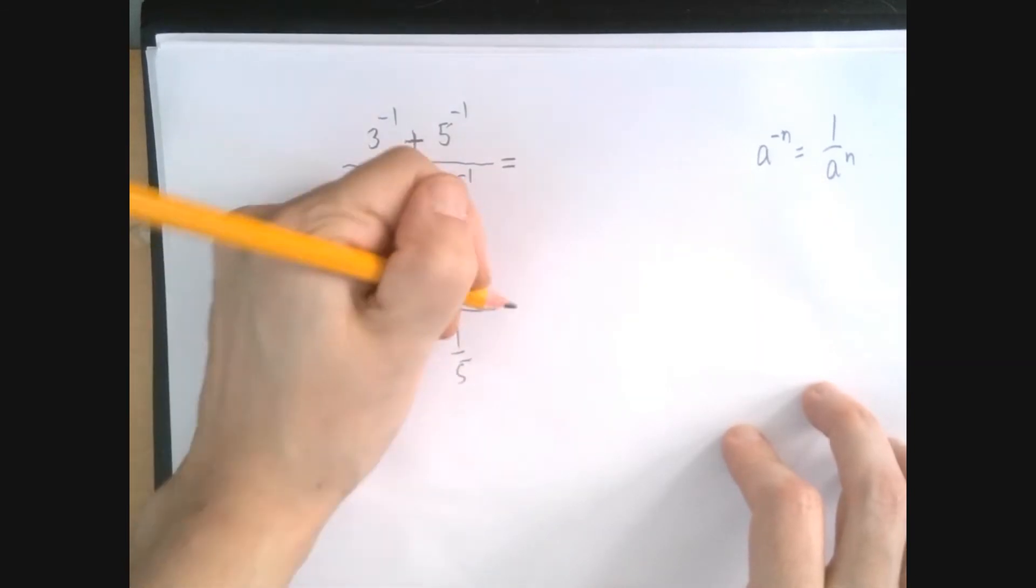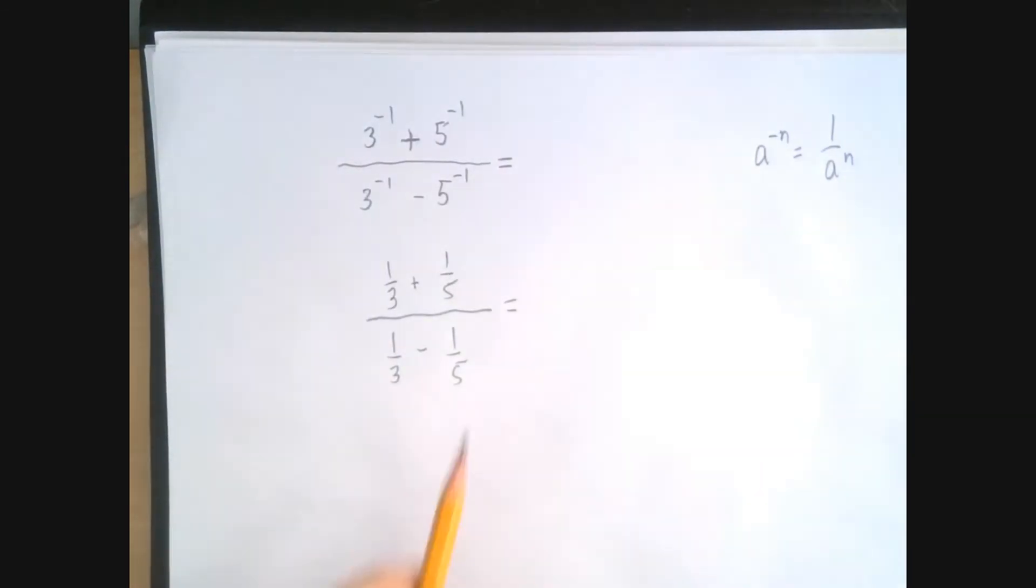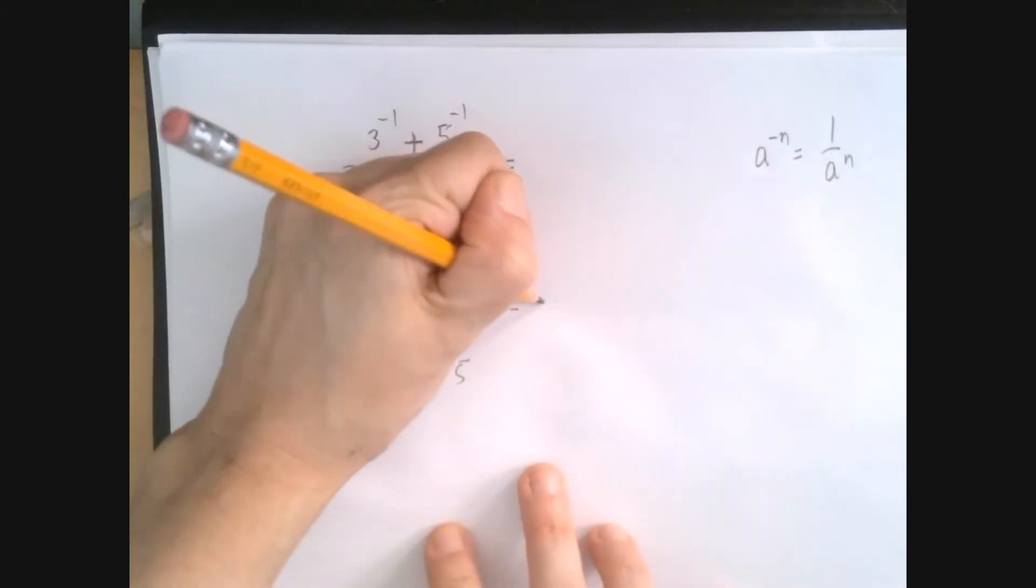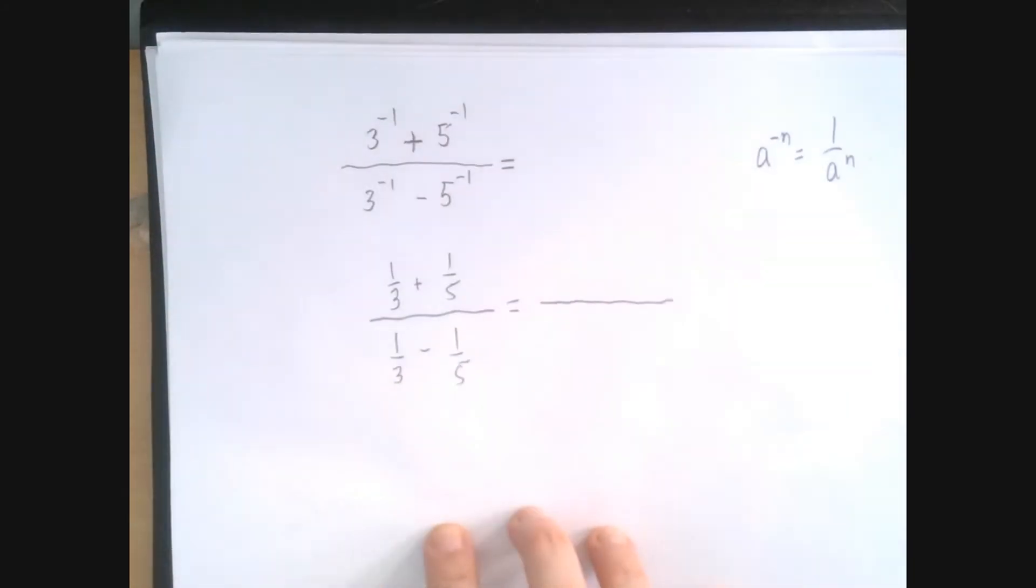And the same in the denominator. So at this point now, it's just arithmetic with fractions. In both the numerator and the denominator, we're going to bring stuff to the common denominator, then add and subtract, and finally divide by multiplying by the reciprocal.